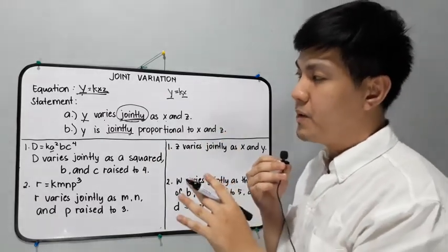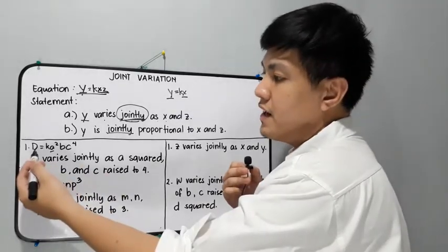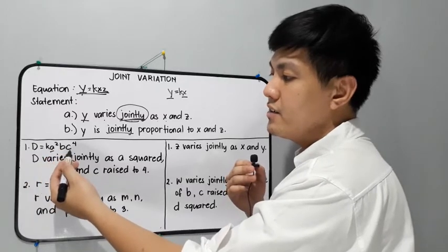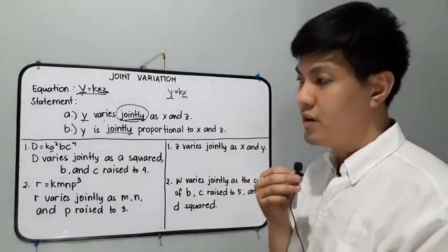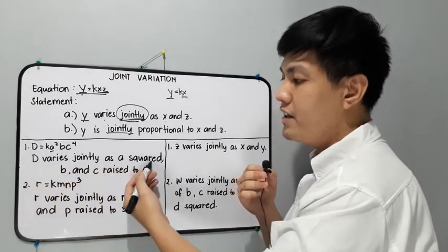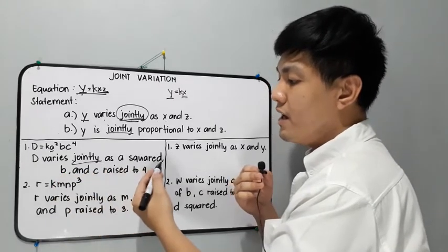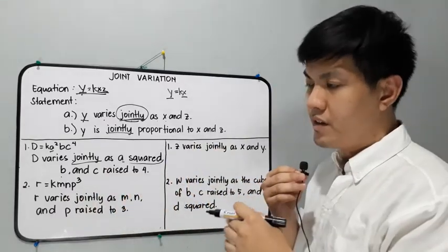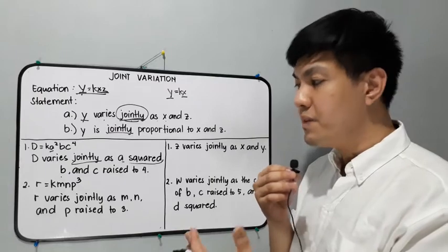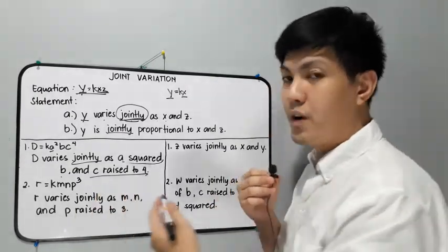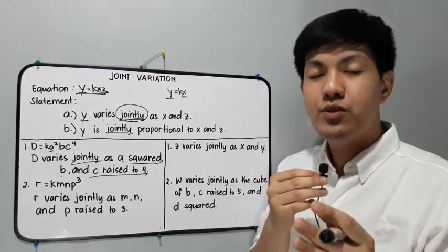Let's have an example of joint variation, translating from equation to statement. We have d is equal to k times a squared times b times c raised to 4. This equation is an example of joint variation. Translated into a statement: 'd varies jointly as a squared, b, and c raised to 4.' We can also express a squared as 'a raised to 2' or 'a to the power of 2,' and c raised to 4 as 'c to the 4th power.'